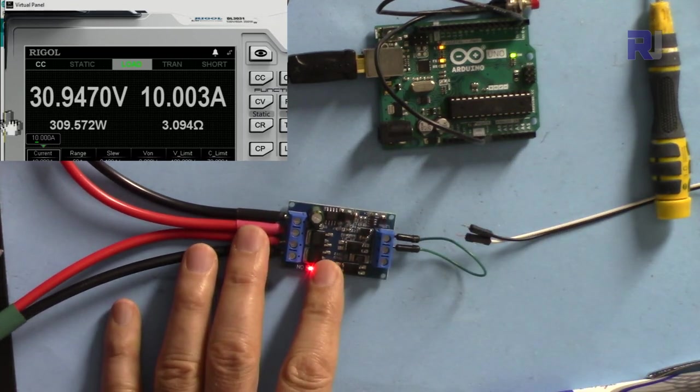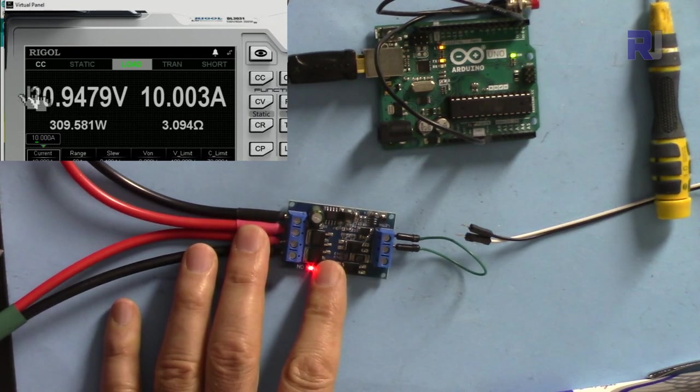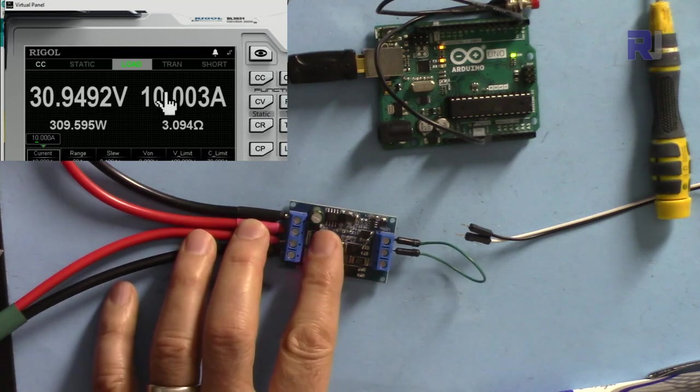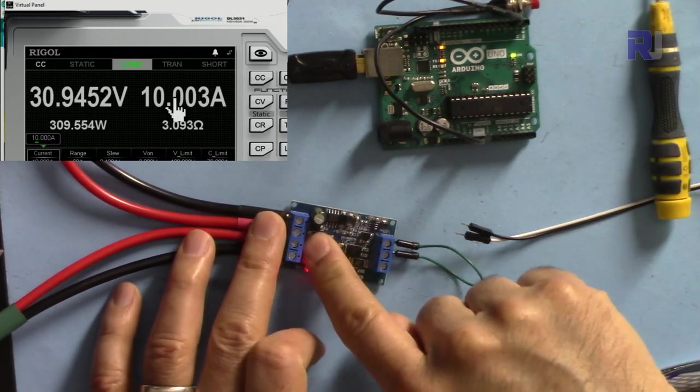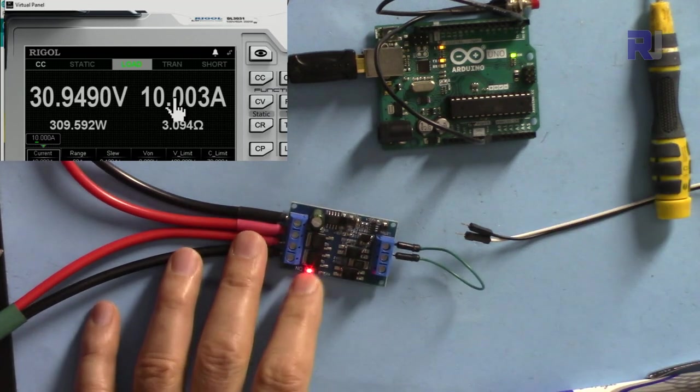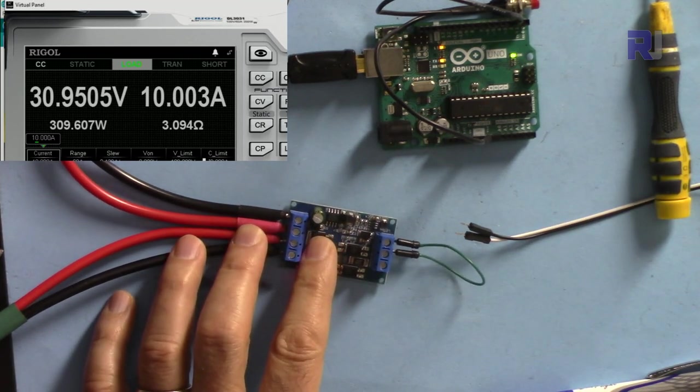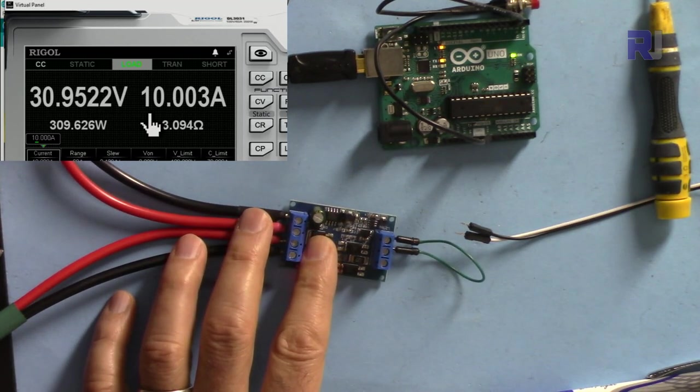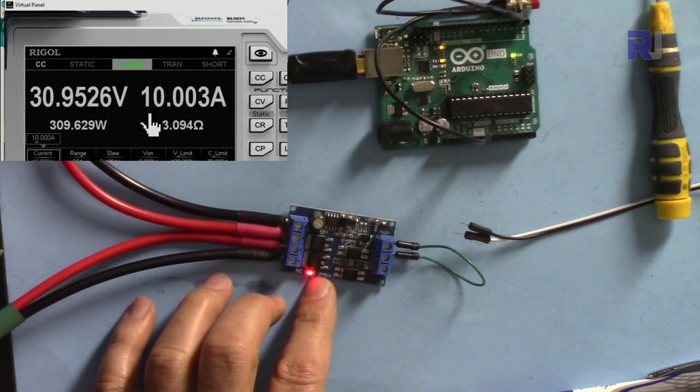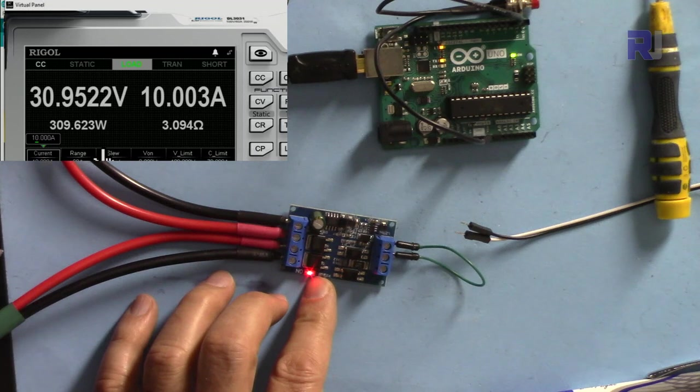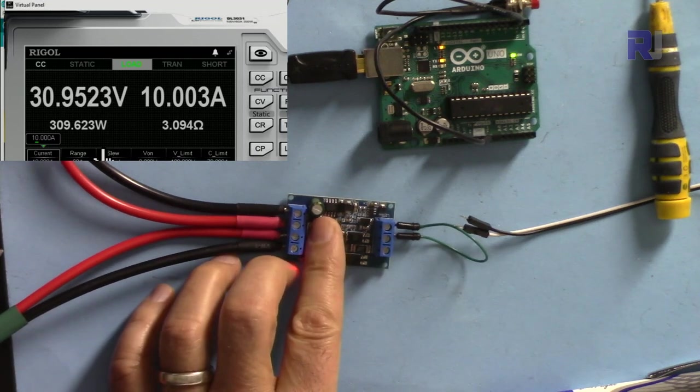Now I increased the voltage to 30 volts, 10 ampere. Now all the current is passing through this but the amount of current is 10 ampere - that's very important. Still it is very cool. Amazing.